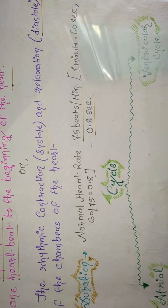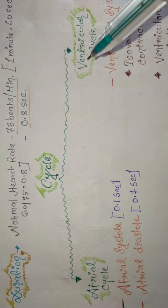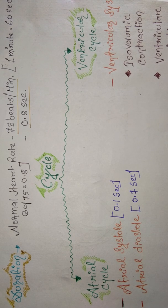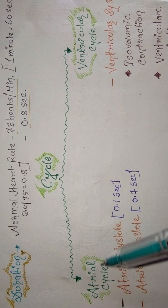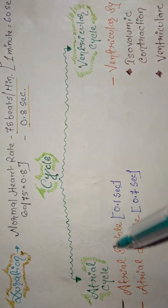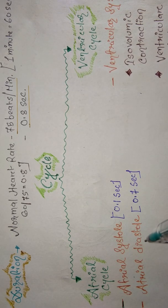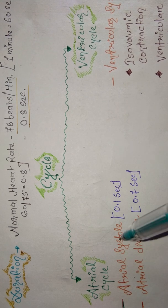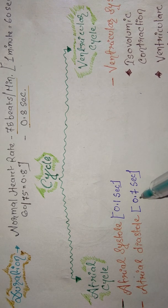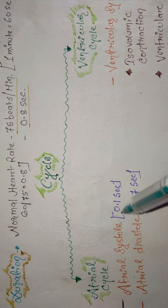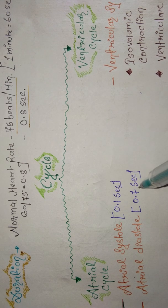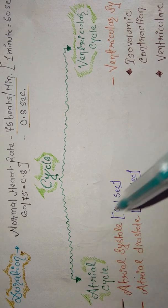The cardiac cycle is divided into two portions: the atrial cycle and the ventricular cycle. The atria are the upper chambers and the ventricles are the lower chambers. The atrial cycle is further divided into atrial systole (contraction) lasting 0.1 second and atrial diastole (relaxation) lasting 0.7 second.